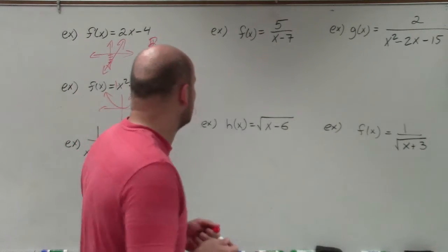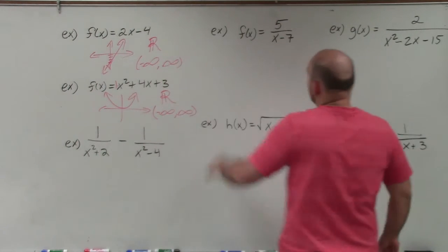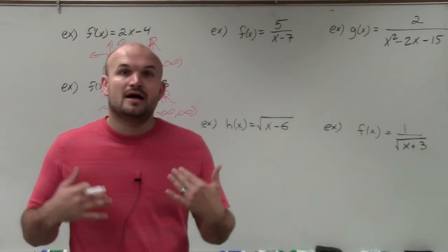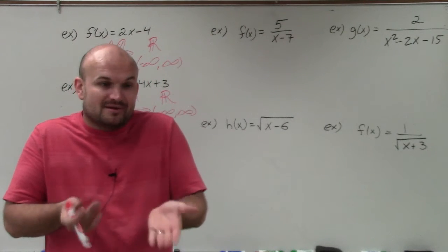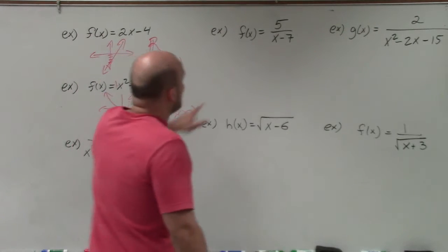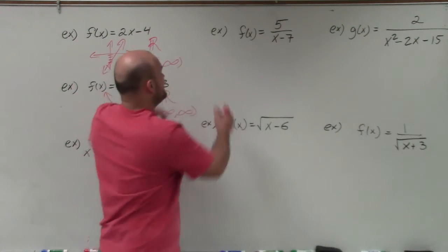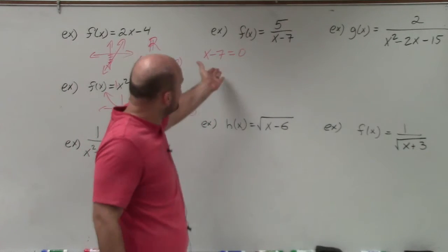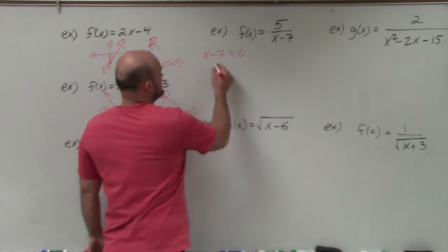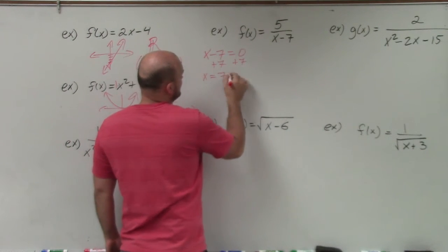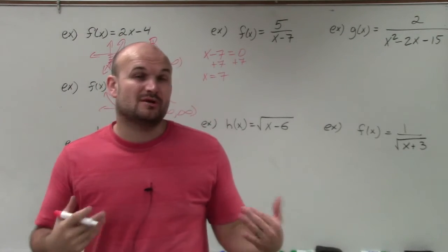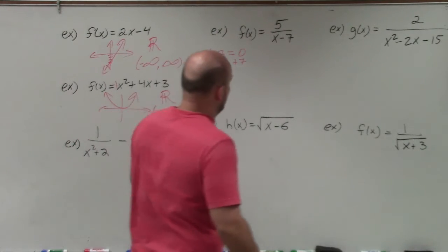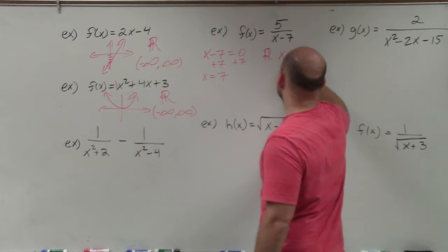Now let's get into some problems that have restrictions. Here we have a rational function: f of x equals five divided by x minus seven. The domain is all real numbers except you cannot have any number that makes your denominator equal to zero. So we set x minus seven equal to zero and solve: x equals seven. So the only value that cannot be part of the domain is seven. We can say it's all real numbers, but x cannot equal seven.